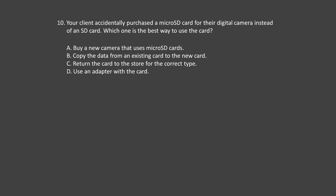Question number 10. Your client accidentally purchased a micro SD card for their digital camera instead of an SD card. Which is the best way to use the card? Option A: Buy a new camera that uses micro SD cards. Option B: Copy the data from an existing card to the new card. Option C: Return the card to the store for the correct type. Option D: Use an adapter with the card.